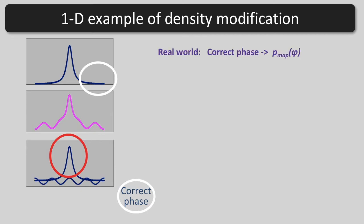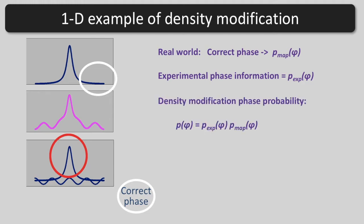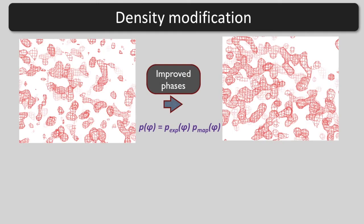In the real world, we don't know the phases of the other Fourier terms exactly. Instead of getting a single correct phase, we get map-based probabilities for each possible phase. We have experimental phase information as well. We can combine these to get our density modification phase probability for this one Fourier term. Finally, we use our new phase information to calculate a map.